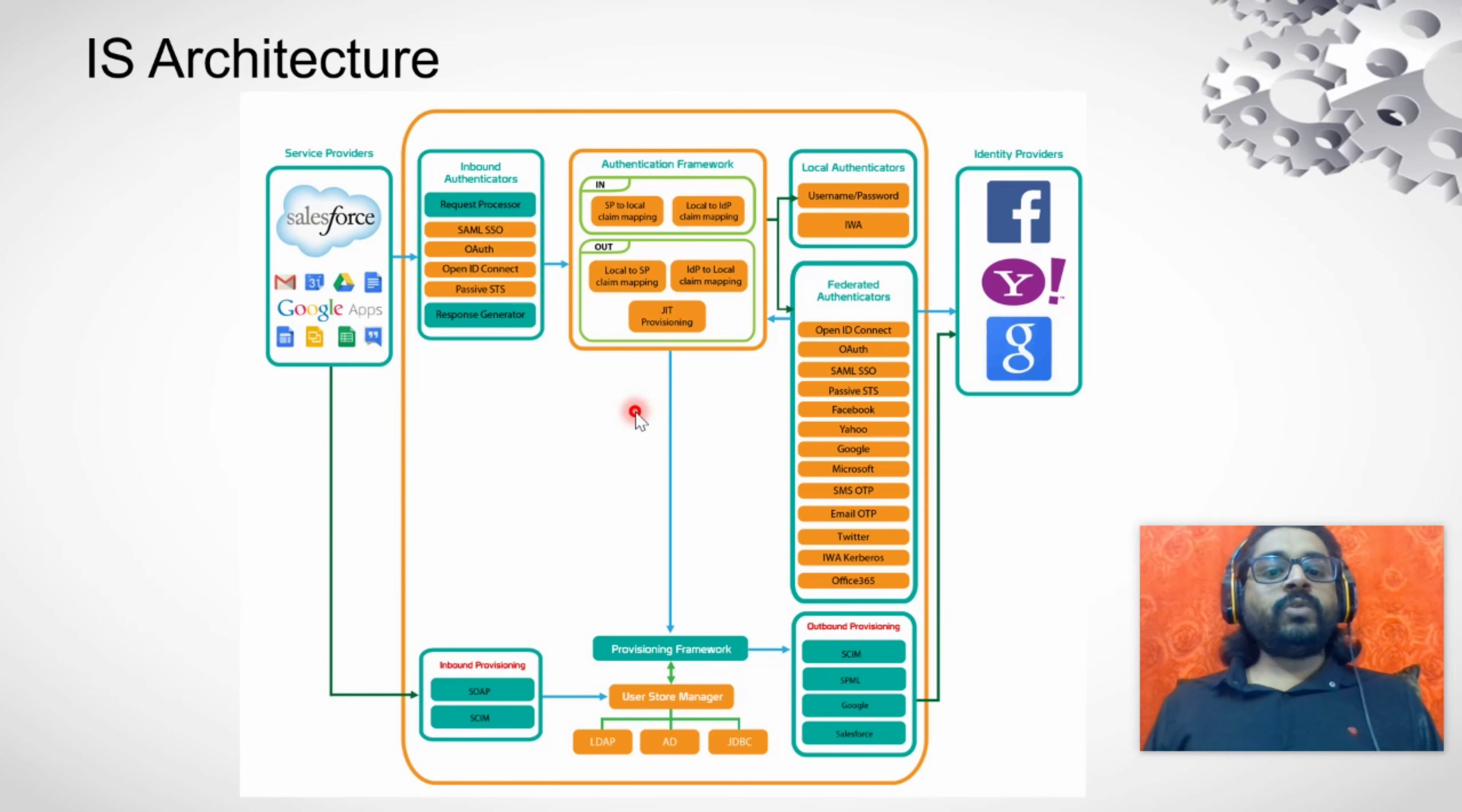Just-in-time provisioning is used when you use federated authentication. A classic example is that you go to a web application and instead of signing up, you use your Google credential to sign up to that application. So what just-in-time provisioning does is when the credential you have passed in the Google login page is valid, it creates the same user into the identity server at the time of authentication. When your authentication is successful, it will immediately provision the user into the identity server.